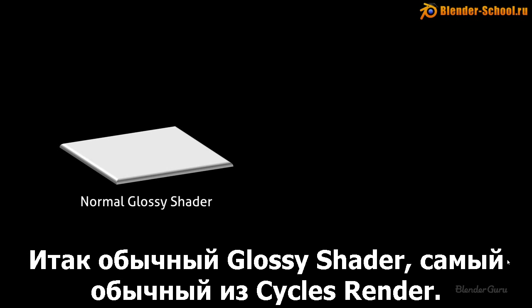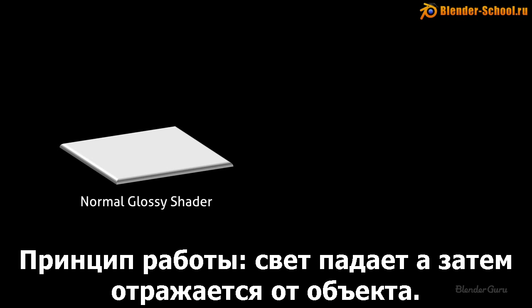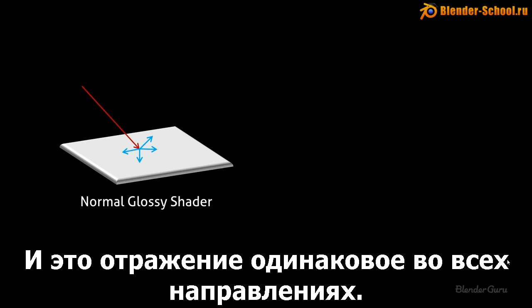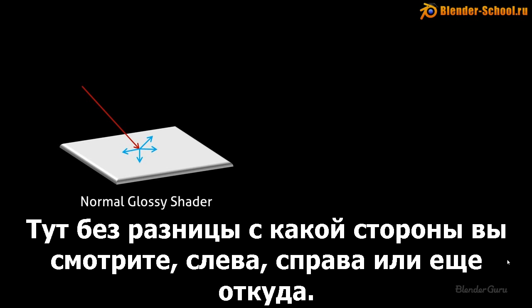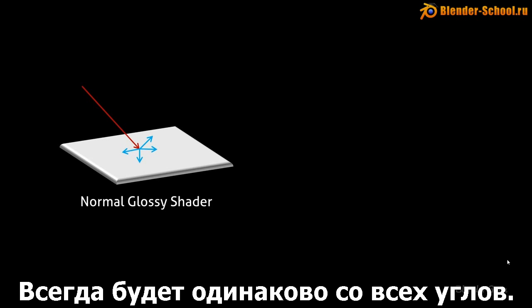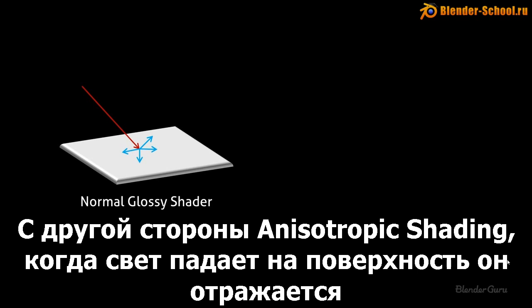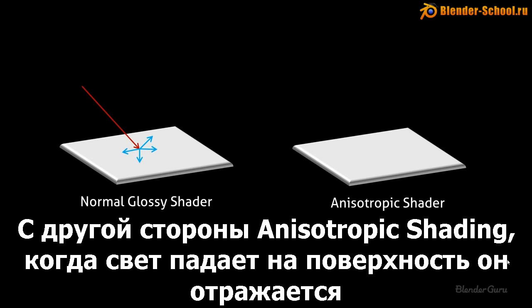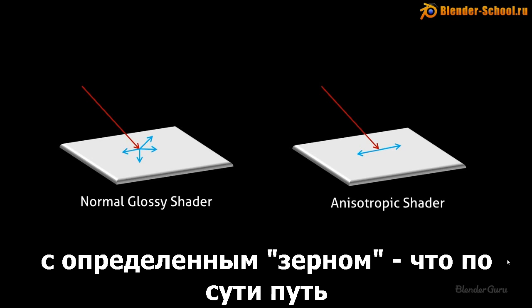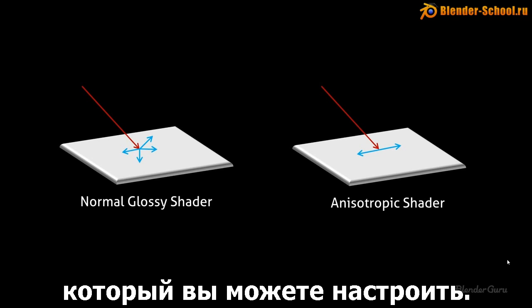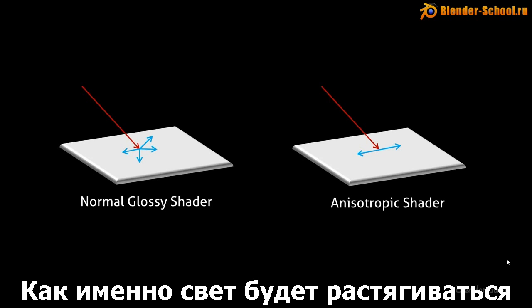The normal glossy shader in Cycles — you just click on Glossy Shader. The way that behaves is the light comes down and it reflects off the surface, and that reflection is the same in all directions. It doesn't matter if you view it from the left angle or the right angle — it will be the same in all directions. Anisotropic shading on the other hand, the light will come down and reflect in a defined grain — the path that you define as the user when you create the shader, which will be where the light is stretched along.